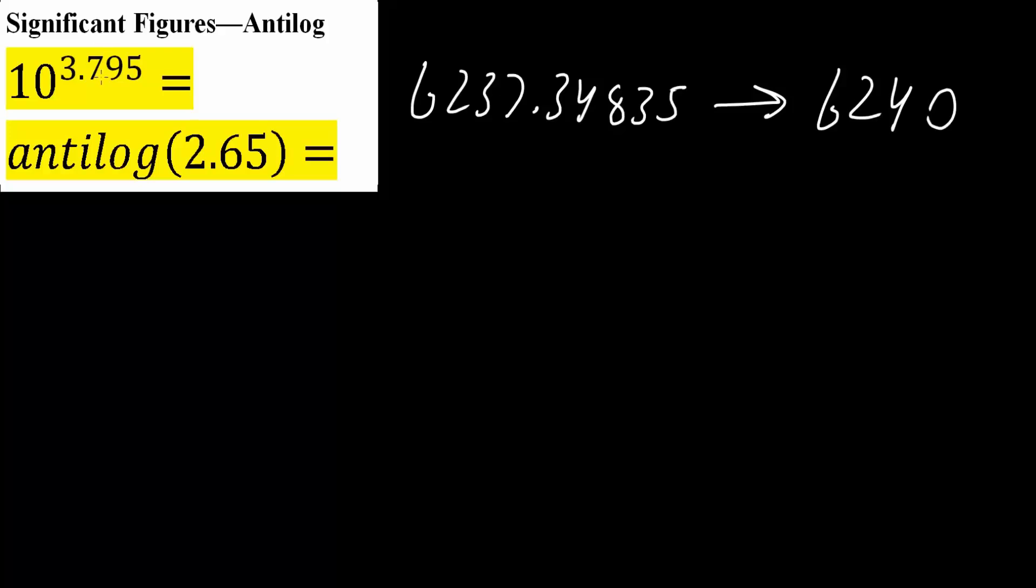And this is because, for antilogs, what we do is we see 795. We ignore the 3, we go only after the decimal place. So just 795.